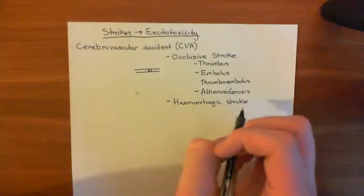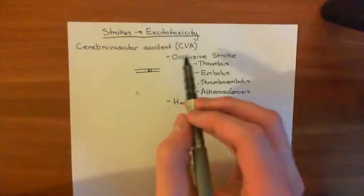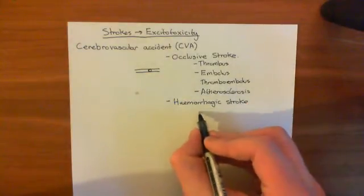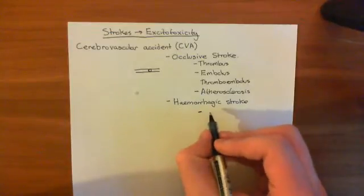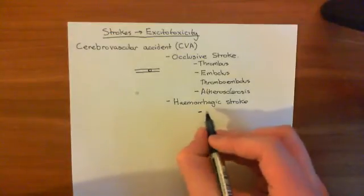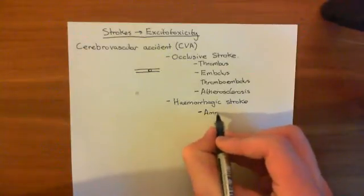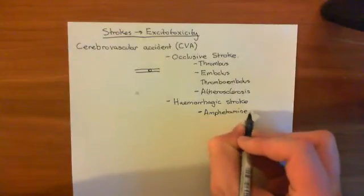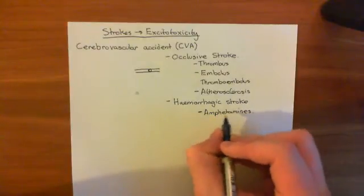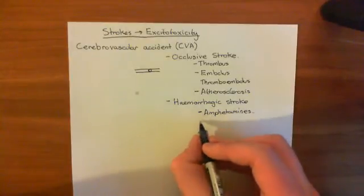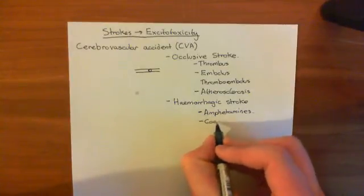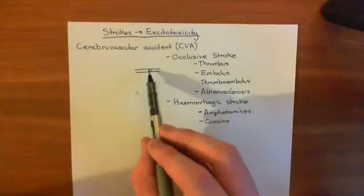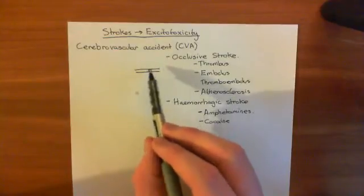Hemorrhagic strokes are rarer and are generally seen in younger people, whereas occlusive strokes are seen in older people. Hemorrhagic strokes are often caused by people taking psychostimulants — amphetamines are notorious for causing hemorrhagic strokes because they cause blood pressure to go up so much. Any drug which causes blood pressure to rise substantially, such as amphetamines or cocaine, risks a hemorrhagic stroke, because if blood pressure gets too high it might just burst the blood vessels open.